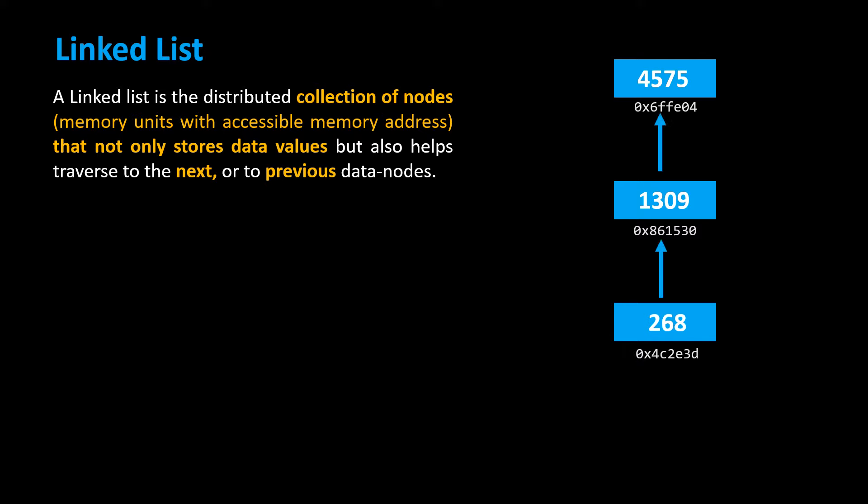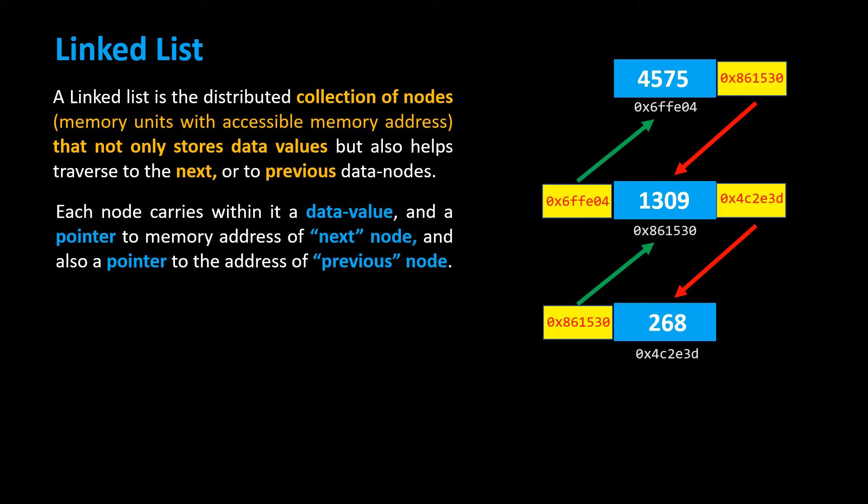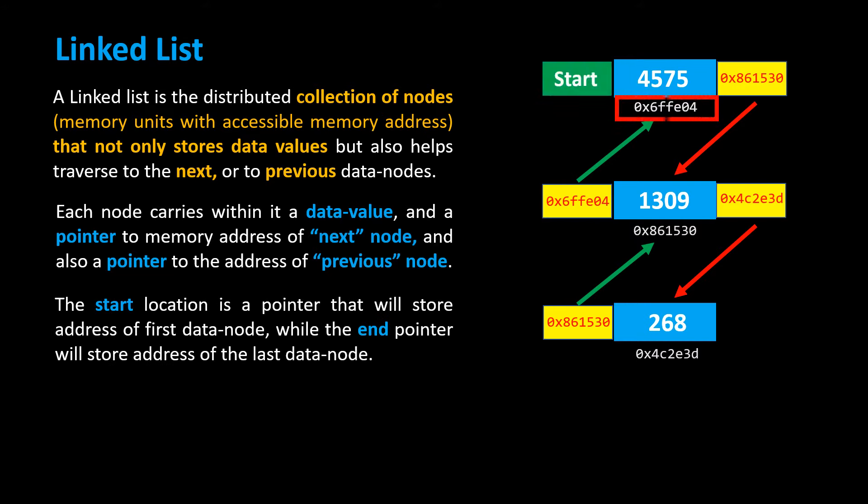Each node carries within it a data value and a pointer to memory address of next node, and also a pointer to the address of previous node. The start location is a pointer that will store address of first data node.